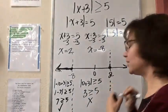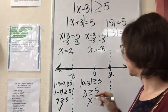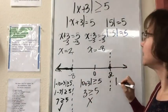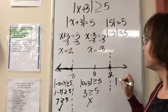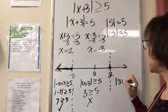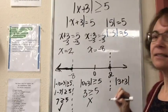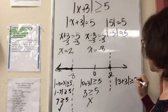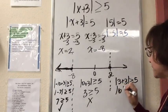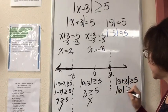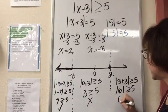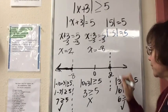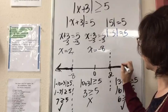Now let's check to the right of 2. I'll check x equals 3 — that's an easy one. The absolute value of 3 plus 3, letting x equal 3, to see if it's greater than or equal to 5. The absolute value of 6 is 6, and 6 is greater than or equal to 5. This is true, so the region to the right of 2 is also part of the solution.